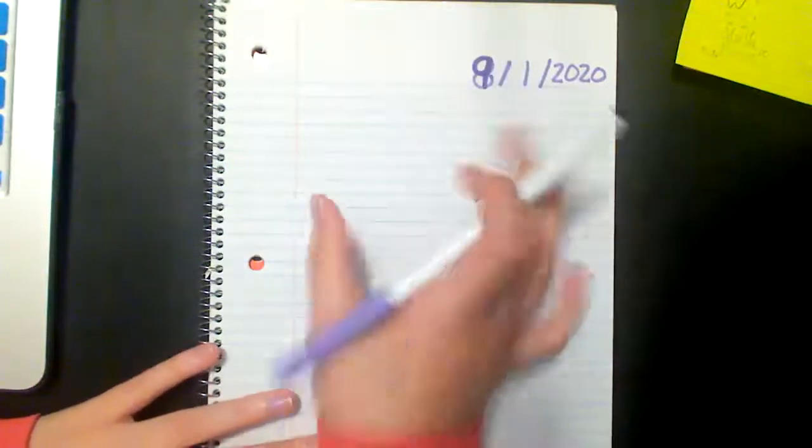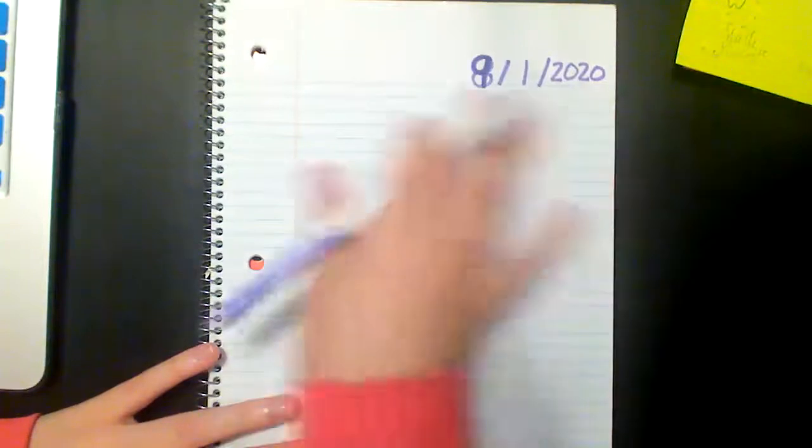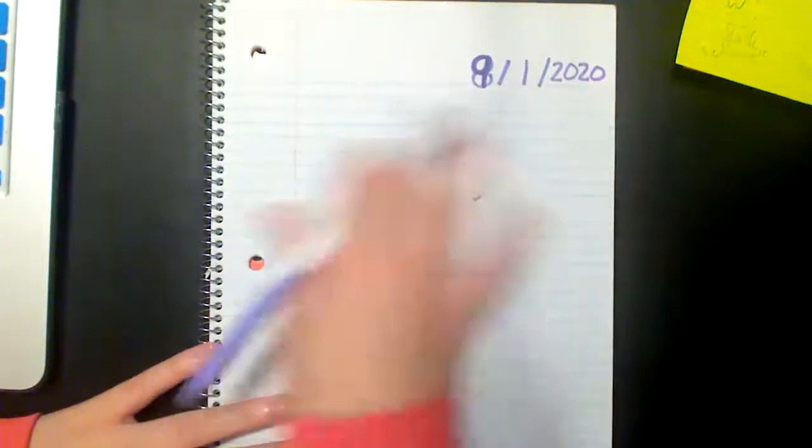So now what we're going to do is we're going to be working with dots again but this time we're going to combine the dots and get a new number to count the entire amount or total amount of dots. So let's go ahead and get started.